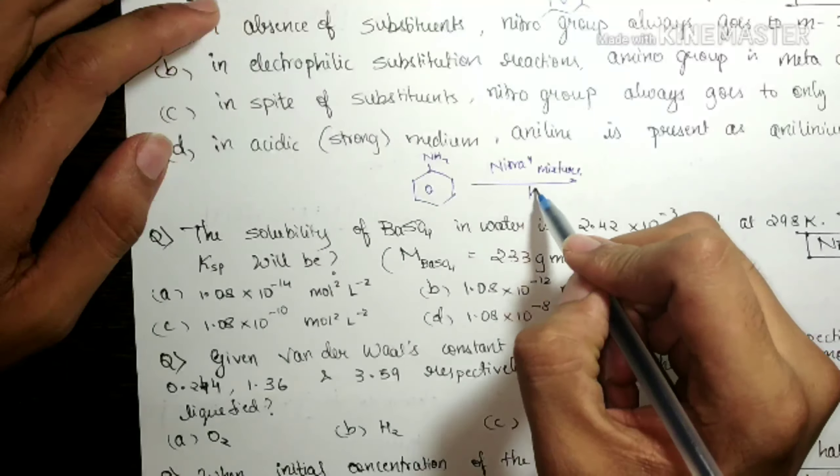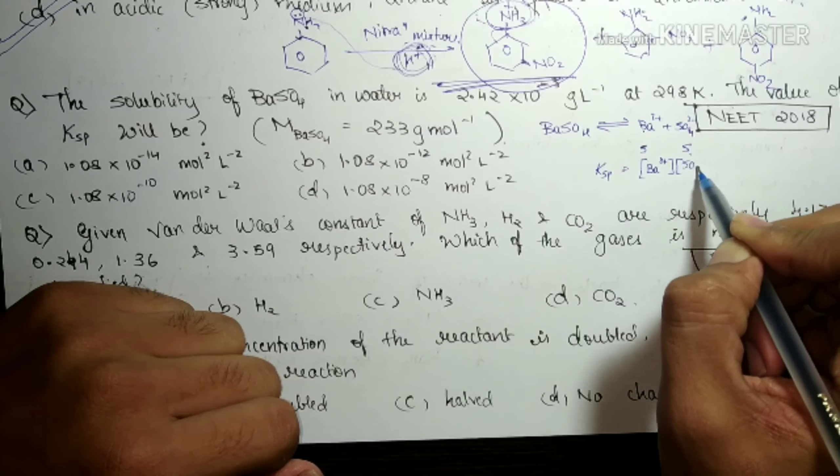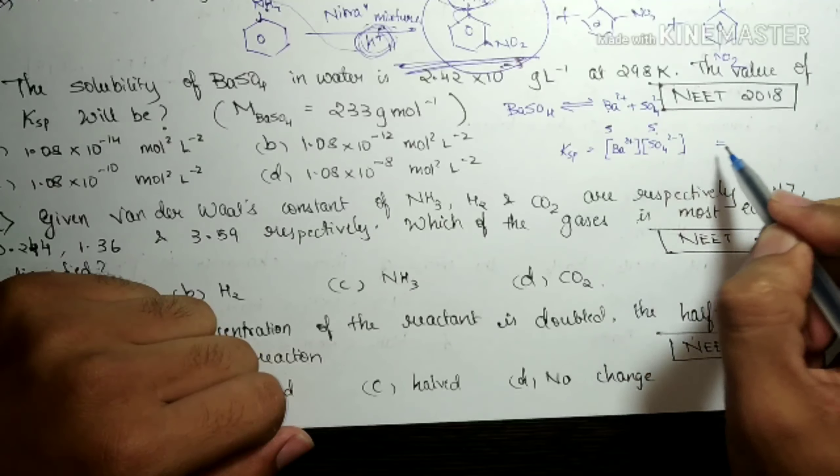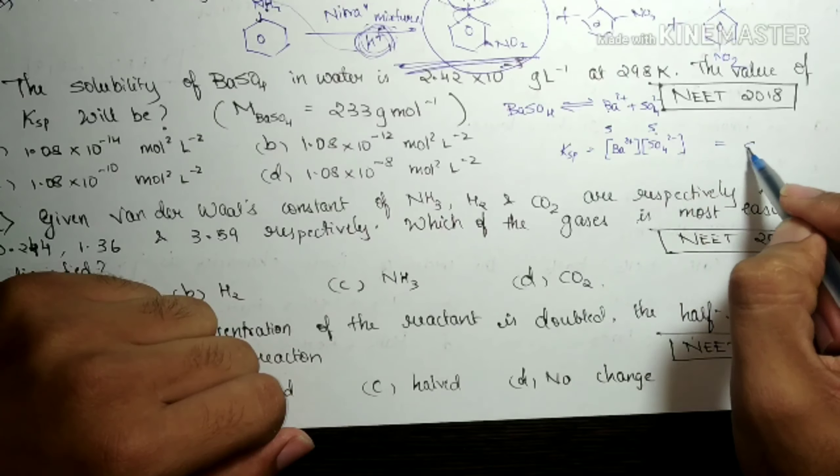The next question says, the solubility of BaSO4 in water is 2.42 × 10^-3 grams per liter at 298 Kelvin. What is the value of the KSP? You know that BaSO4 in water splits as Ba2+ plus SO4 2-. If the concentration, if I call it as S, this also will be having same concentration S because they are in same number of moles. So KSP is given by concentration of Ba2+ into concentration of SO4 2- equals S into S, both have S concentration that is S square.